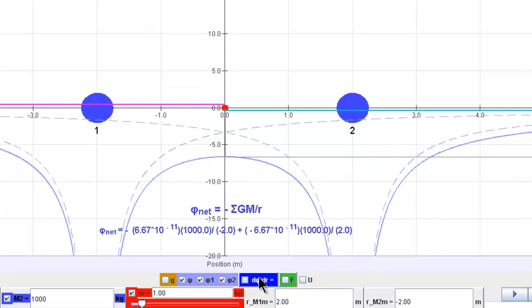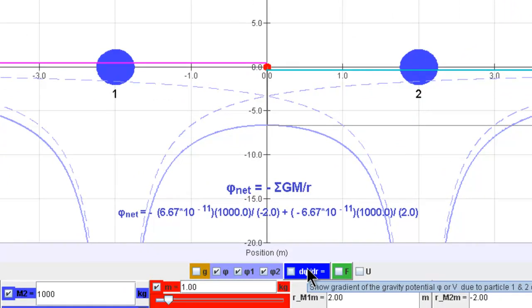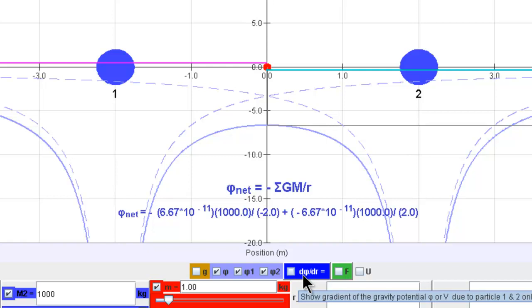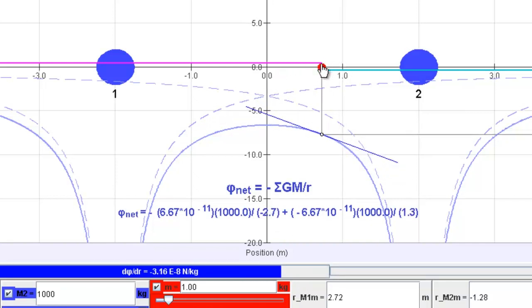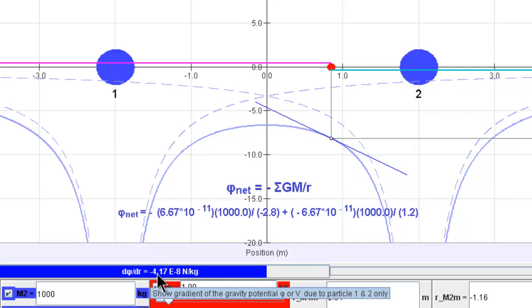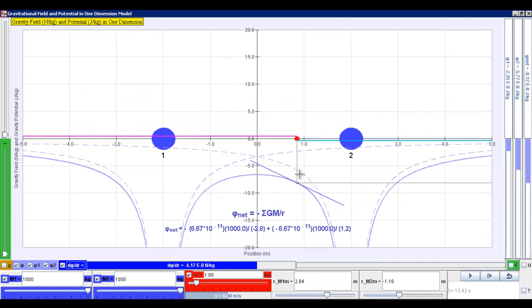Now the last thing that you can play with this simulation and discover for yourself will be this d phi over dr. So d phi over dr is actually the gradient. As you can see if I move the test mass around, this gradient here is your d phi over dr and it is currently having a value of negative 4.17 to the power of minus 8.